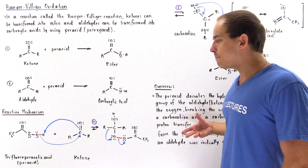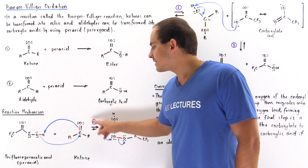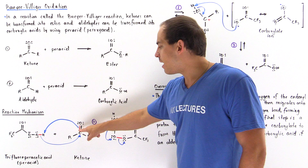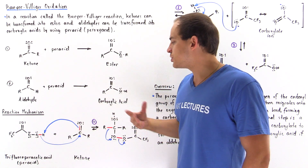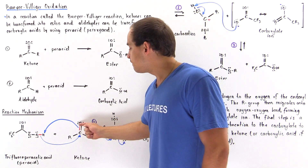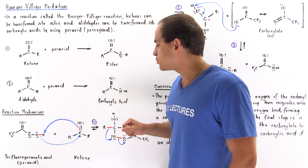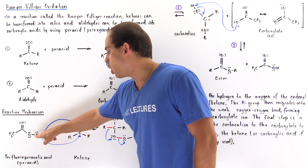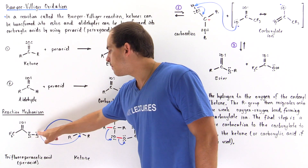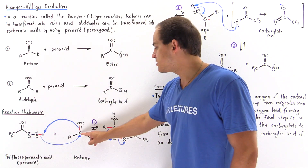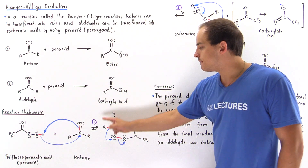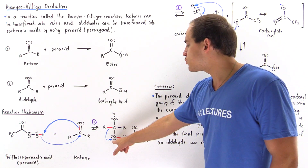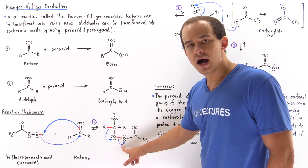In step one, the hydroxy group of the peroxyacid acts as the acid and the carbonyl oxygen of the ketone acts as the base. The pi bond of the carbon-oxygen double bond of the ketone breaks, forming a bond between the carbonyl oxygen and the H atom of the peroxyacid, while the sigma bond between O and H breaks and a new bond between the peroxyacid oxygen and the carbonyl carbon is formed. This gives us a tetrahedral intermediate containing the weak oxygen-oxygen bond.